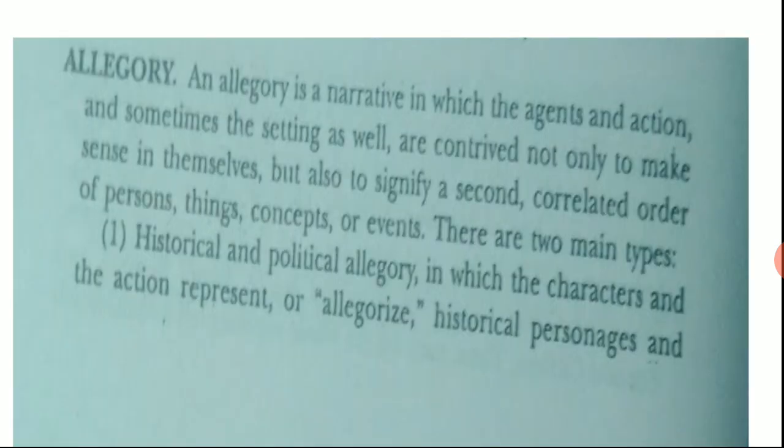An allegory is a narrative in which the agent, the action, and even the setting are contrived not only to make sense in themselves, but also to signify a second correlated order of agents, action, or places — sometimes events. There is one story with its own meaning, but another more significant story is indicated by that first story. It may be a character, an event, or a description of a place that signifies something else.